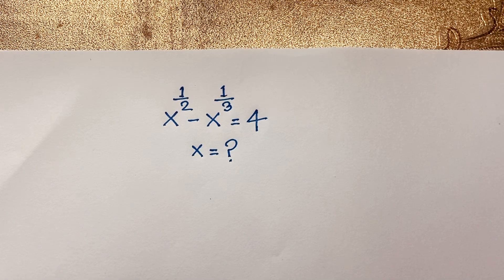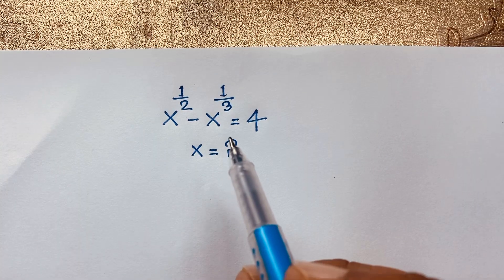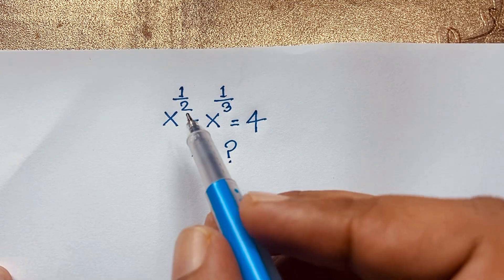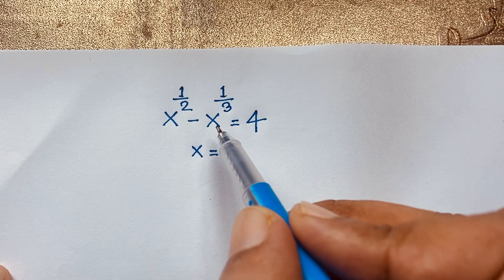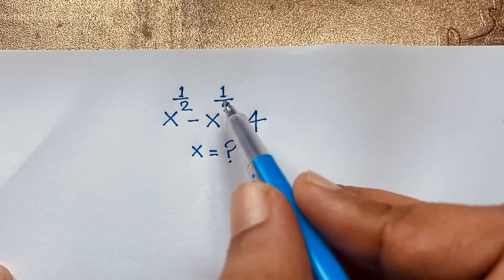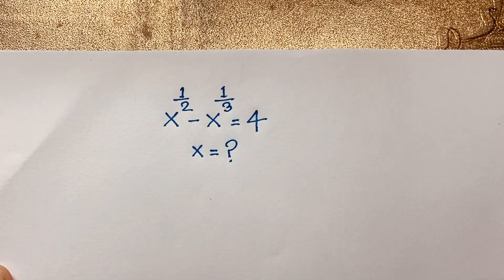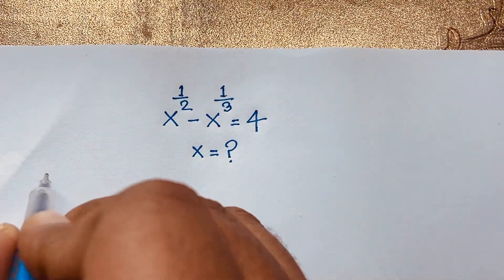Hello everyone, welcome to Rasha's classroom. Today we are solving an interesting exponential math olympiad question. It is a German math olympiad question, which is x to the power half minus x to the power 1 over 3 is equal to 4. x is equal to what? How to solve this interesting math olympiad question?